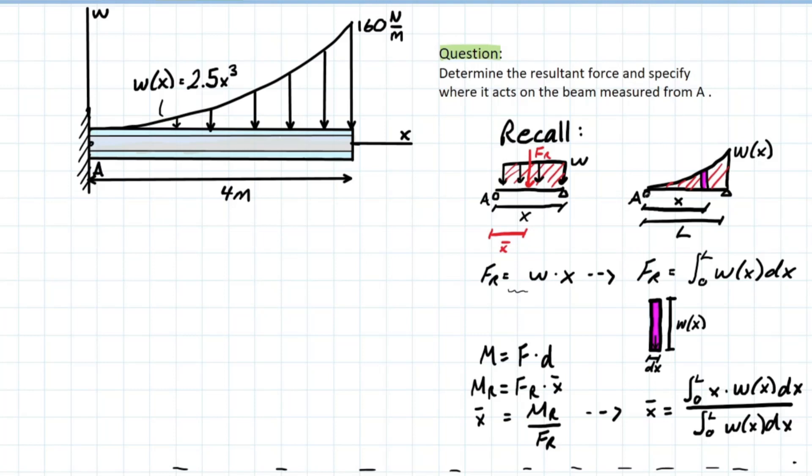Now for fr based on the function, we know that if we take the integral of a function, we're going to have the area underneath the curve. So if we take the integral of the entire span, considering the function of the distributed load, plug in the values of x, that means we're going to have the area underneath the distributed load.